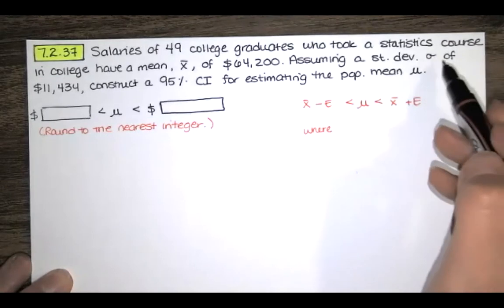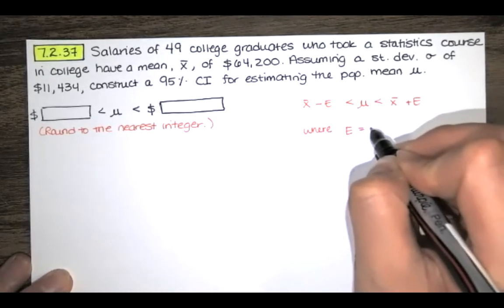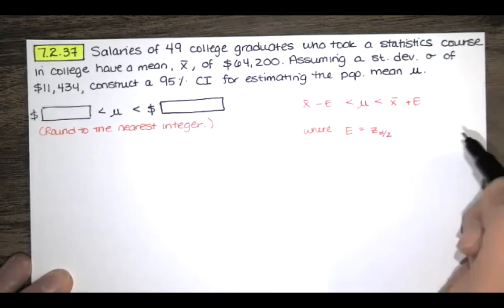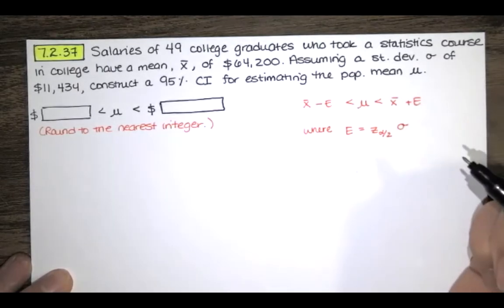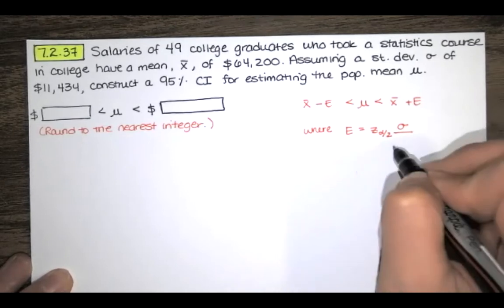But this error is computed using a different formula now. If we have the population standard deviation, the error turns out to be Z sub alpha over 2 times the population standard deviation over the square root of the sample size.